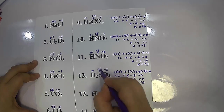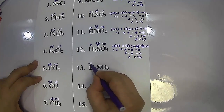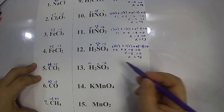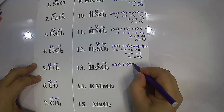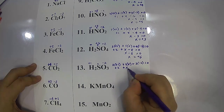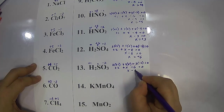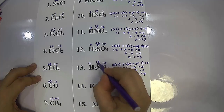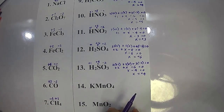For sulfurous acid (H₂SO₃), hydrogen is positive one and oxygen is negative two. Letting sulfur equal x: two times positive one plus one times x plus three times negative two equals zero. Positive two plus x minus six equals zero, so x minus four equals zero, therefore x equals positive four. Sulfur in hydrogen sulfite is positive four, whereas sulfur in sulfate is positive six.